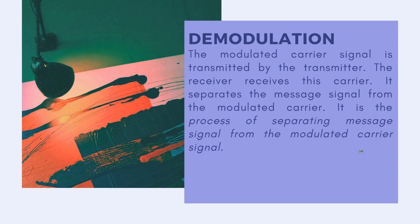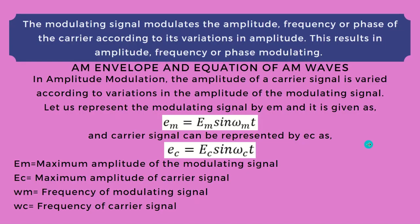Demodulation: the modulated carrier signal is transmitted by a transmitter, and the receiver receives this carrier. It separates the message signal from the modulated carrier. Demodulation is the process of separating the message signal from the modulated carrier signal. The modulating signal modulates the amplitude, frequency, or phase of the carrier according to its variation in amplitude, resulting in amplitude, frequency, or phase modulated waves.